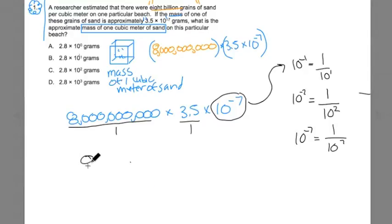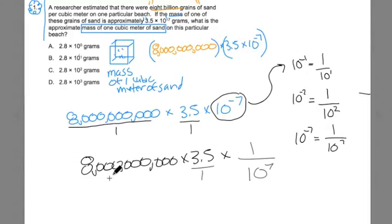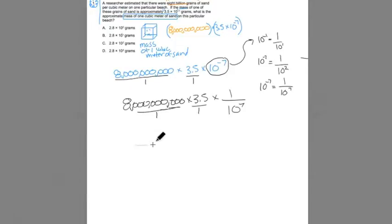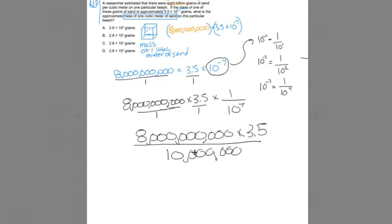This becomes three fractions being multiplied together. 8 billion times 3.5 times 1 over 10 to the 7th. When you're multiplying out fractions, you multiply the numerators times the numerators and the denominators times the denominators. On the top, I would have 8 billion times the 3.5. Now the 10 to the 7th can be written as a 1 and 7 zeros. We actually now have some math that you probably have seen before.